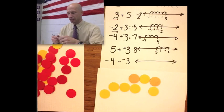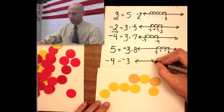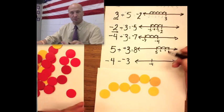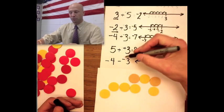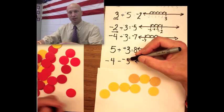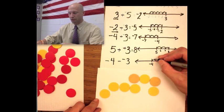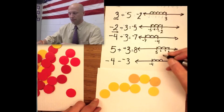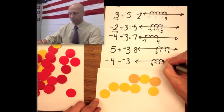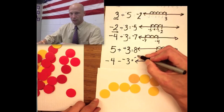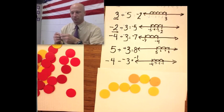Our last problem: negative 4 minus negative 3. Here's negative 4 on the number line and I know that minus means go this way, but I'm subtracting a negative number, so it means turn around and go the other direction. So 1, 2, 3. This is negative 3, negative 2, negative 1. Negative 4 minus negative 3 equals negative 1.